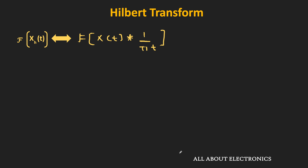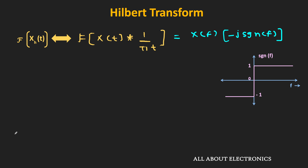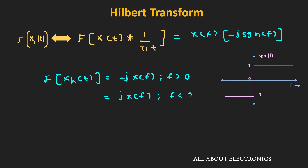So now, the overall Fourier transform of the Hilbert transform signal Xh(f) is equal to X(f) times (−j·sgn(f)). Since the signum function equals +1 for f > 0 and −1 for f < 0, the Fourier transform of Xh is: −j·X(f) for f > 0, and +j·X(f) for f < 0.